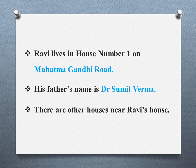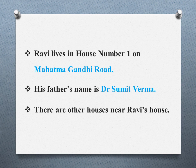Here they have taken one example — a family — and explained about the neighborhood. The boy's name is Ravi. Ravi lives in house number 1 on Mahatma Gandhi Road. That road is the landmark to find his house. His father's name is Dr. Sumit Verma, and there are other houses near Ravi's house.